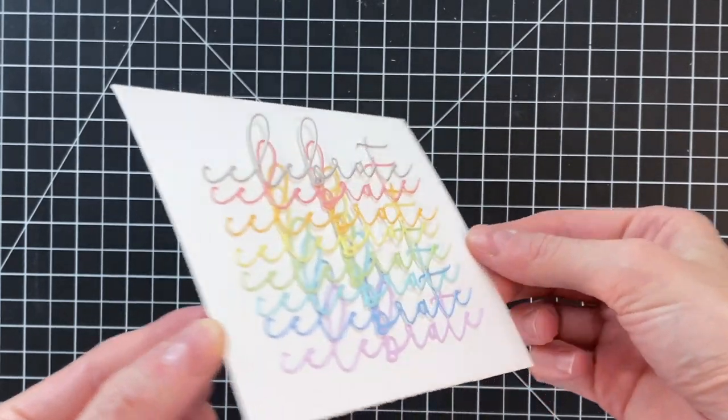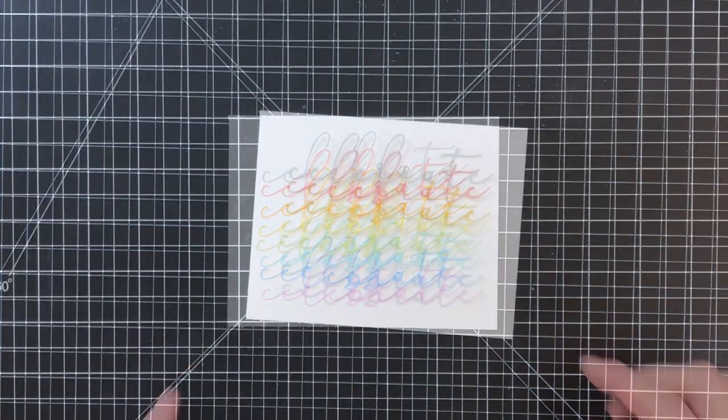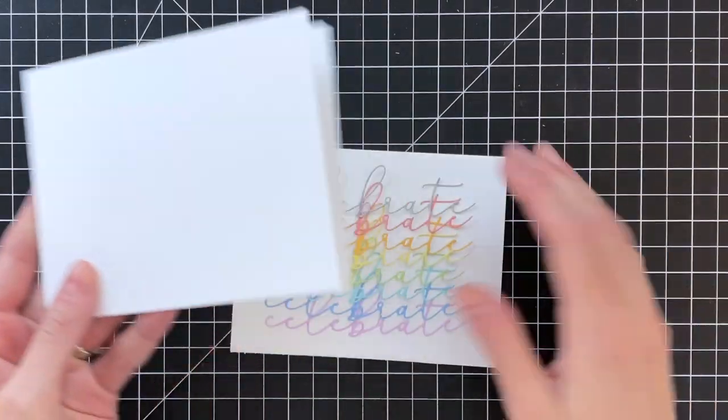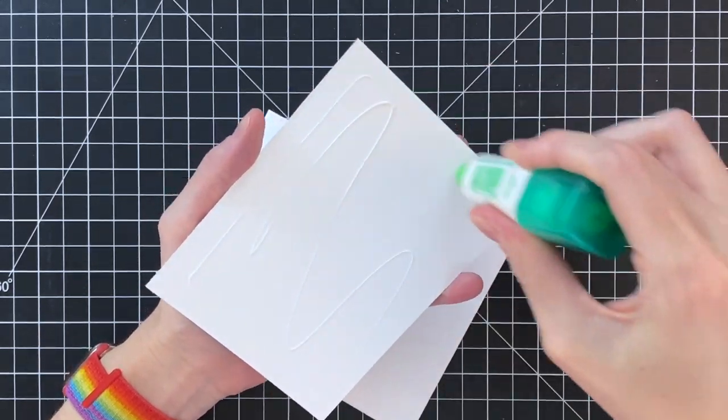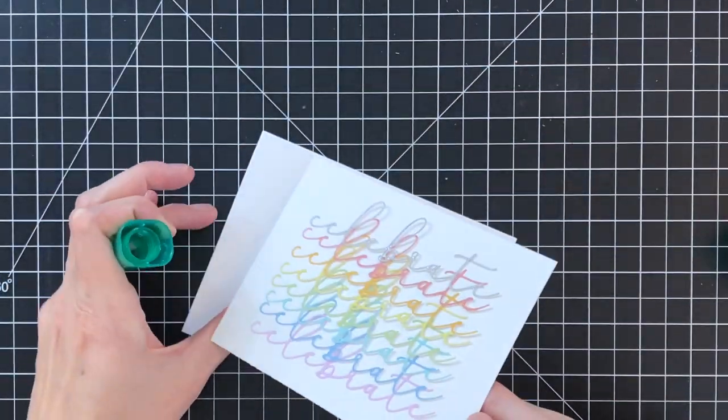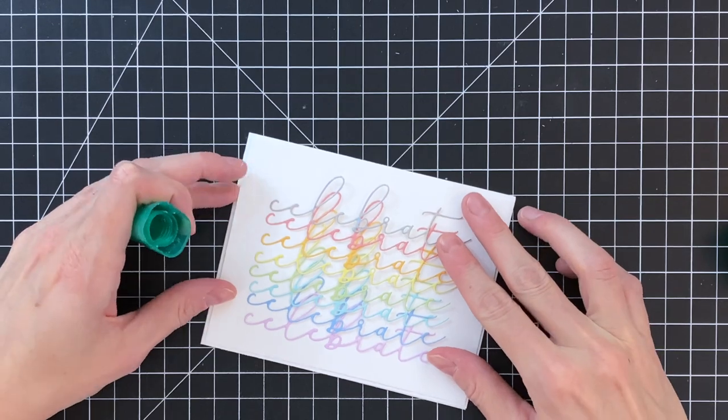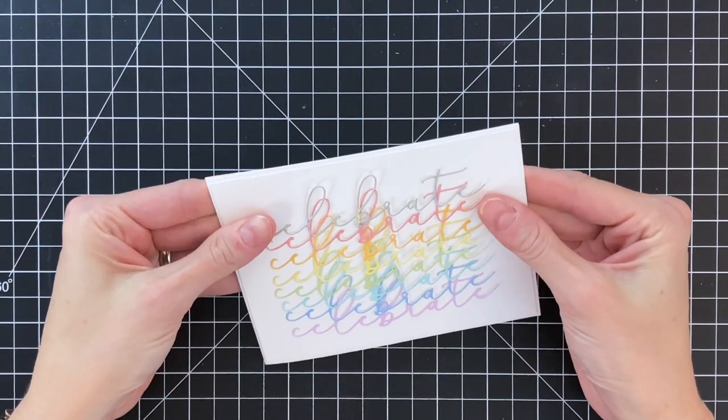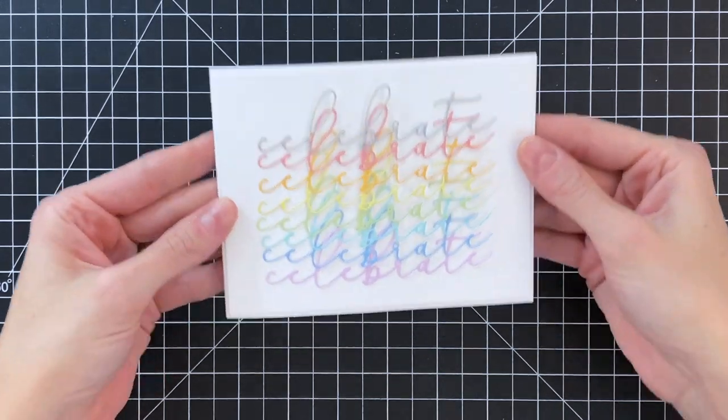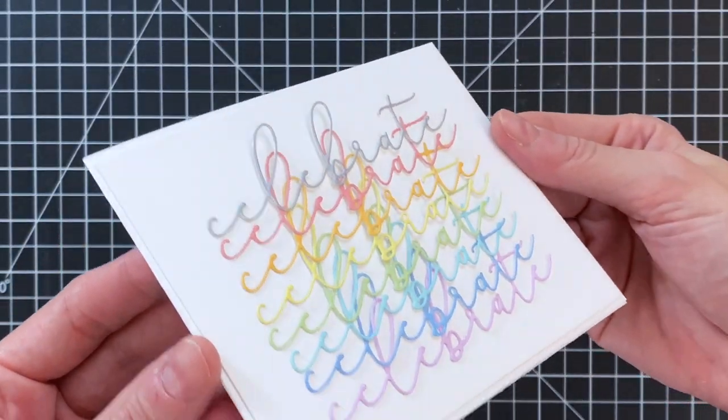And here is the finished panel. I'm ready to kind of adhere this to my card front, so I have an A2 top folding card base turned on its side and I'm just going to add some liquid glue to the back side of my panel and stick it down. And again the panel is a little bit smaller than an A2 card front, so I'm going to have that little one sixteenth of an inch border, which I think is a nice detail just when you have a clean and simple card. So those little details really add a lot.